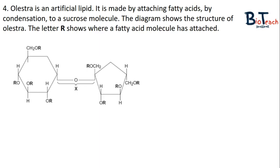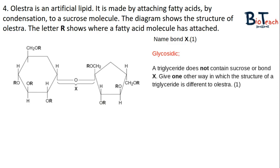Question number four introduces you to something called olestra, which is an artificial lipid. This type of question would expect you to apply some of your knowledge from the theory of lipids. It's made by attaching fatty acids by condensation to a sucrose molecule. The diagram shows where the letter R is, which is where the fatty acid molecules are attached. The first part asks you to label bond X. Sucrose is a disaccharide, and bond X is the glycosidic bond. If you haven't already watched the video on carbohydrates and glycosidic bonds, please go back and watch it.